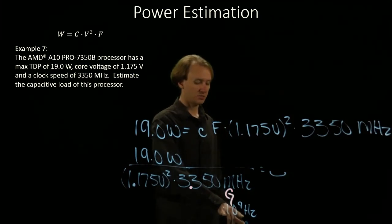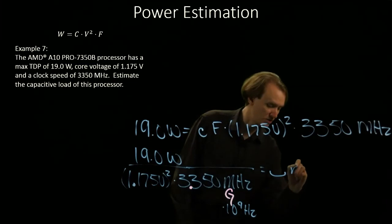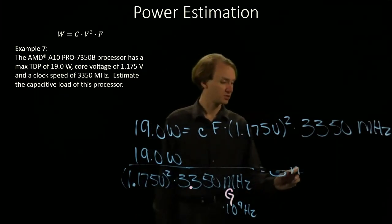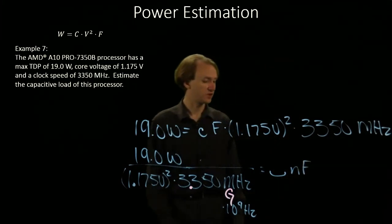And because I've got a 10 to the minus 9th on the bottom, I will get something in terms of 10 to the minus 9th on the top. It would give me nano. And my term is farad.